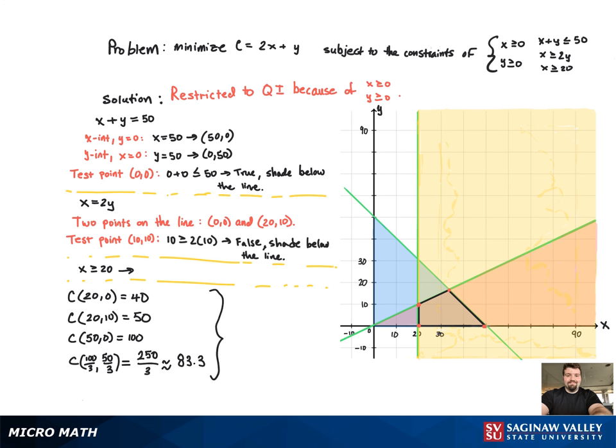With those four points, we can go ahead and see which one's the minimum. We plug them all into the function. And we can see that 40 is the minimum value. So 20 comma 0 is our minimum point. That's it.